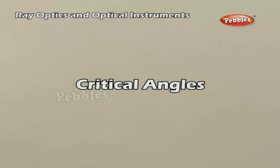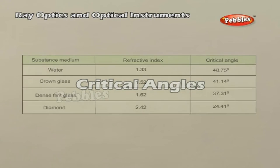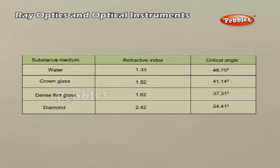Critical angles. The angle of incidence corresponding to an angle of refraction of 90 degrees is called the critical angle (iC) for the given pair of media. Some typical critical angles are listed in the table.